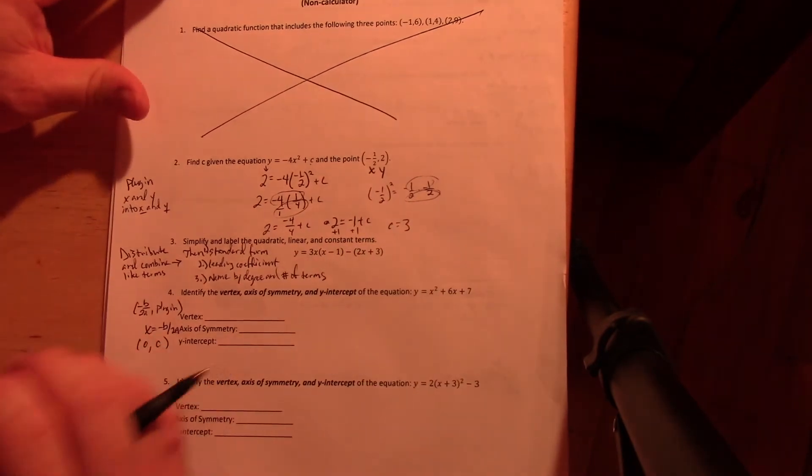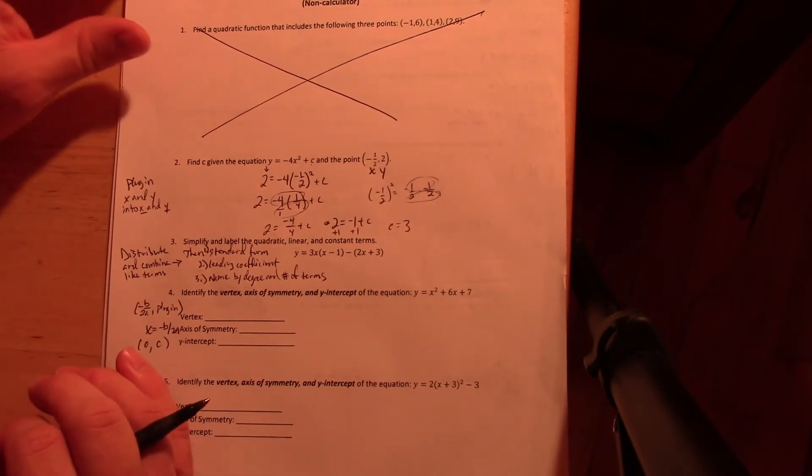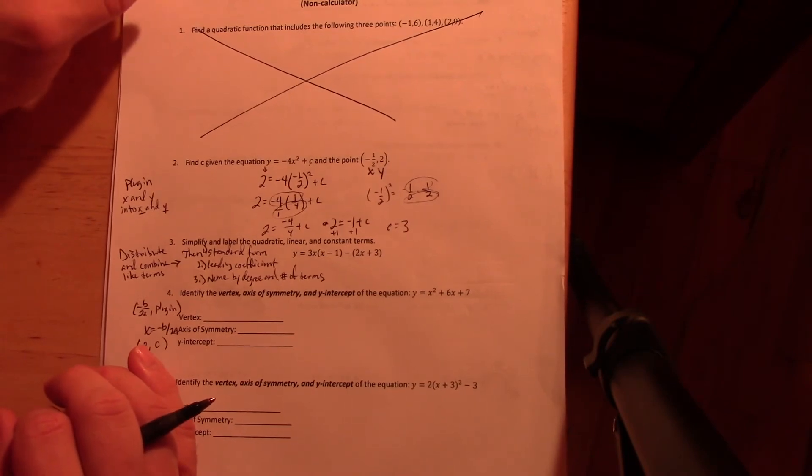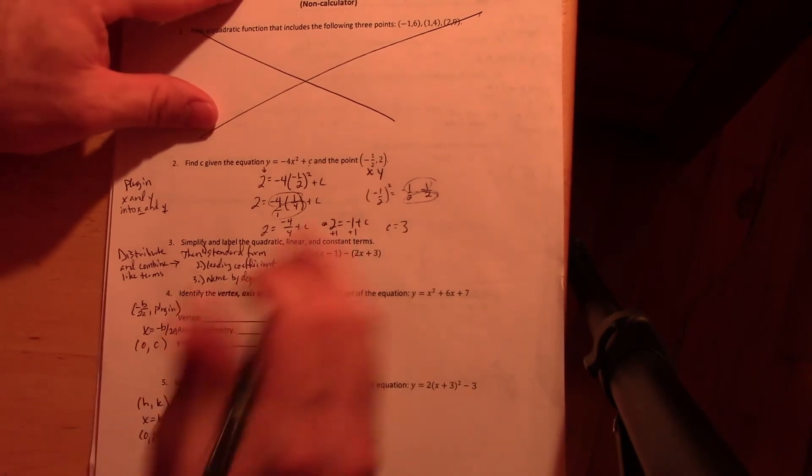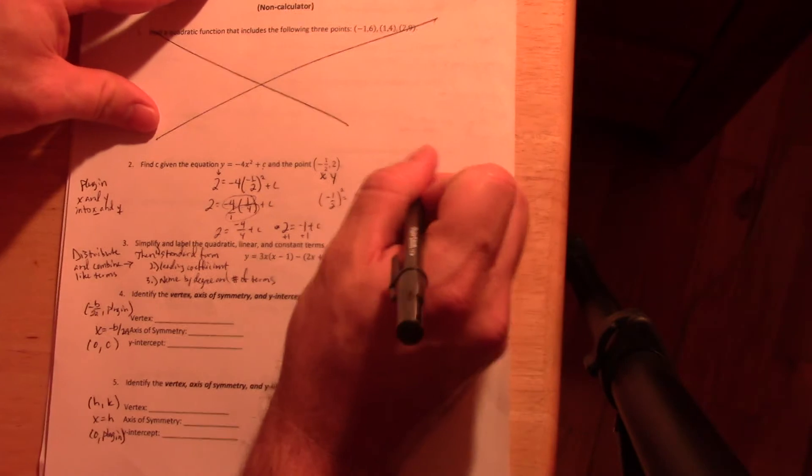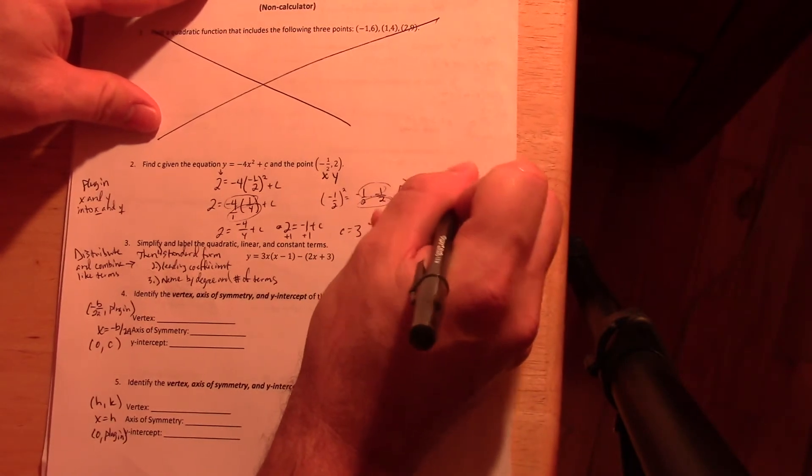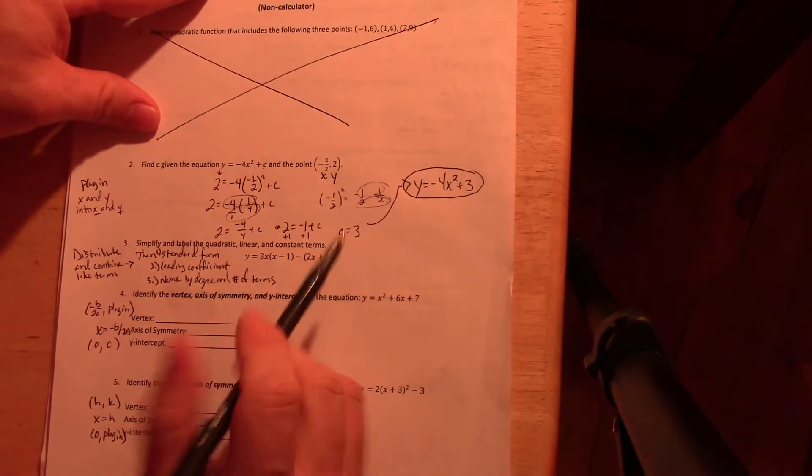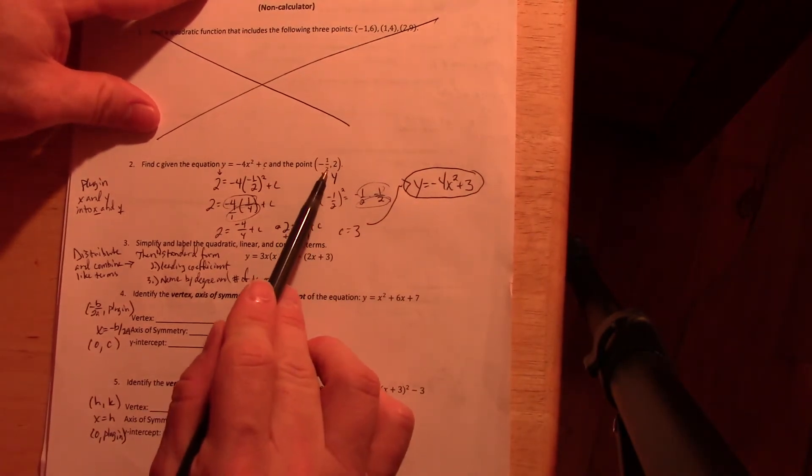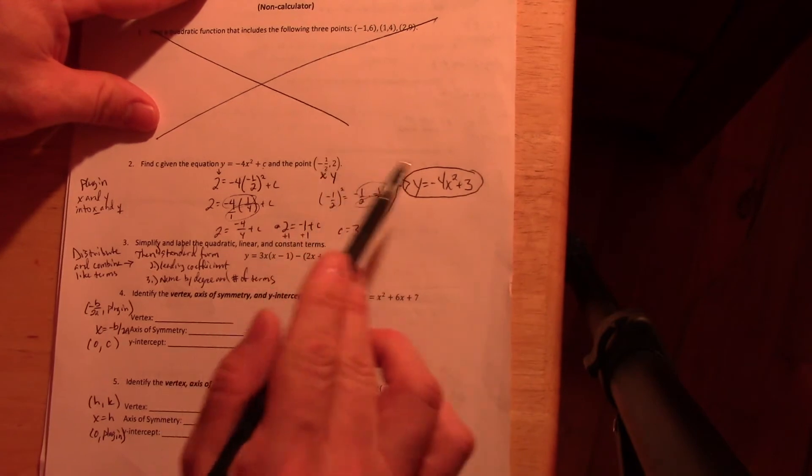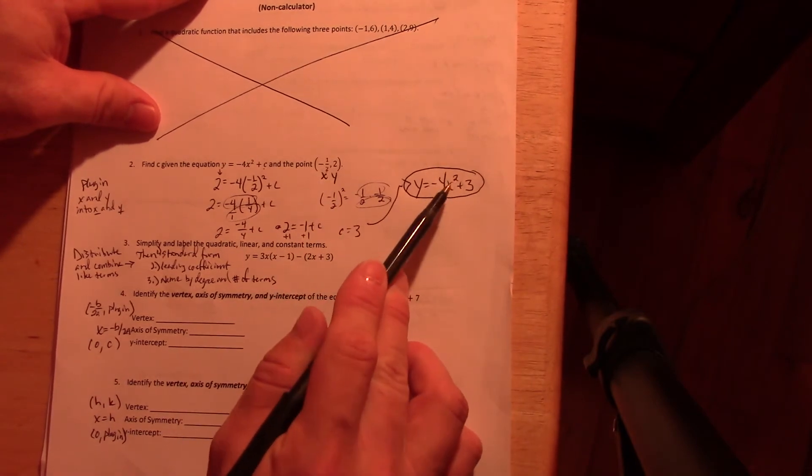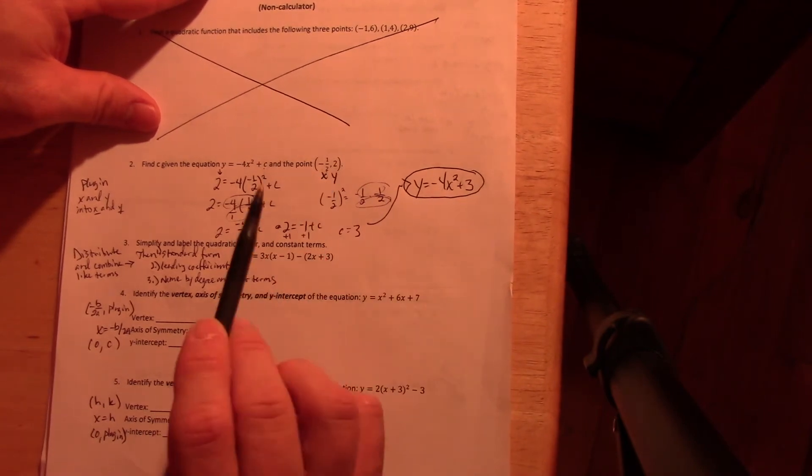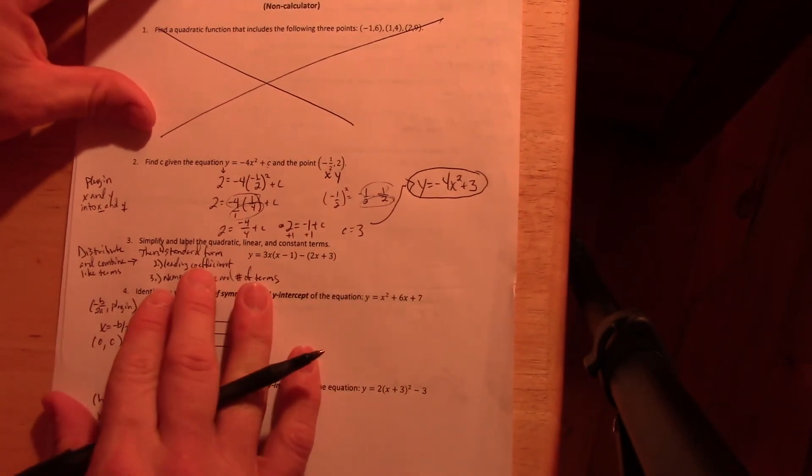Now what I will ask you to do on the test is to complete the equation. So I don't just want you to find what C is, I also want you to rewrite it. So the final answer here is Y equals negative 4X squared plus 3. Now can you double check to make sure if it works? Sure. If I plug this in, I should get: negative one-half squared is one-fourth, one-fourth of negative 4 is negative 1, plus 3 is 2. It works. Do you have to check it? No, but it's a good way to do it to make sure you got it right.